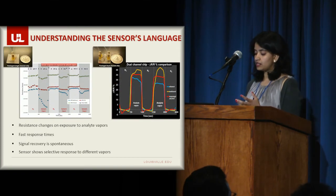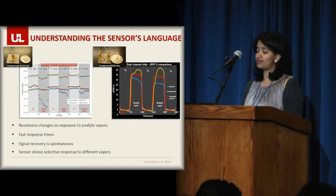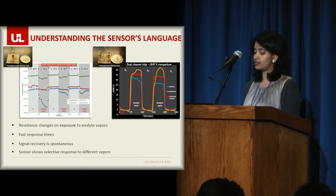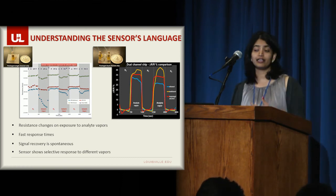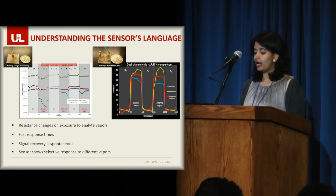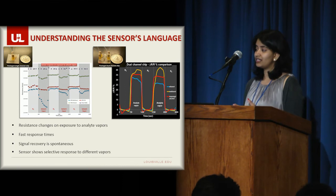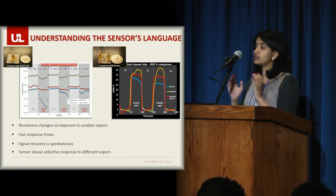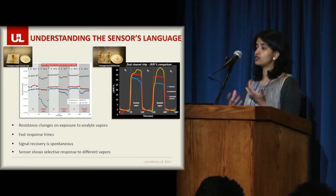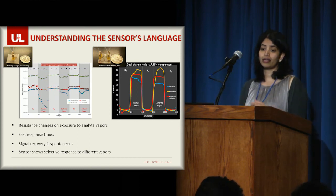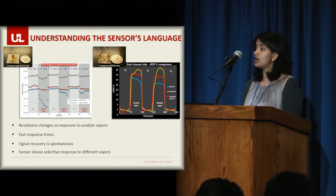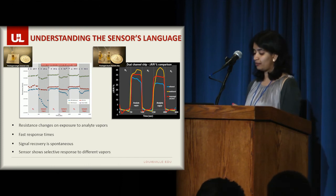This we've seen in both the devices that we've tested out for the single channel as well as the dual channel. The first plot here is for the single channel device and the second for the dual channel. We can see here from these plots that we have alternating cycles of nitrogen and analyte gas that is sent through the device. We've tested these devices for organic solvent vapors like methanol, ethanol, and IPA. And all the three different plots are shown here.